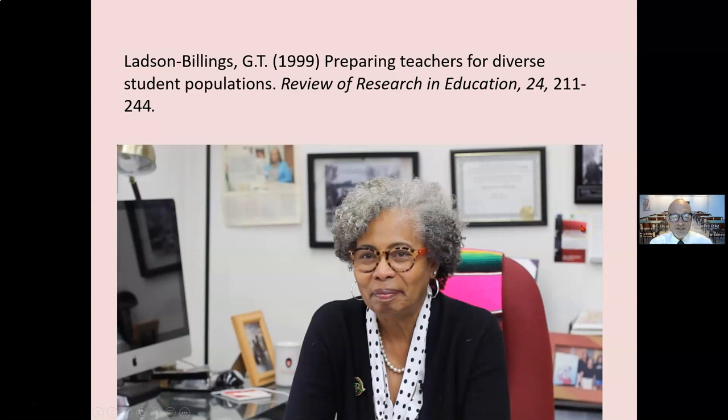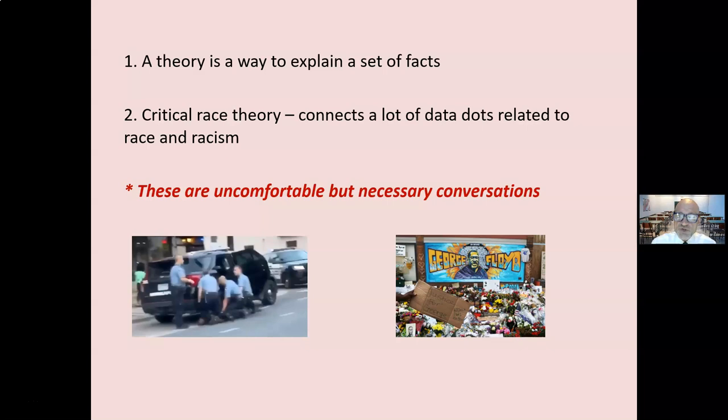It's talked about a lot, but it is kind of hard to get your head around it. Now, a theory is a way to explain a set of facts. It connects different data dots. Different theories connect different data dots differently. Behavioral learning theory connects a set of dots to explain and examine learning — constructivist learning theory, cognitive learning theory, holistic learning theory. Critical race theory connects data dots related to race and racism to help us understand and explain racial inequities.